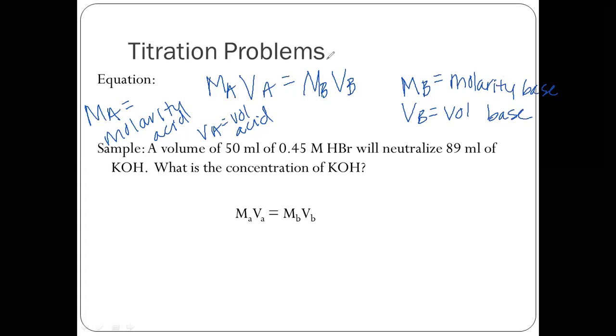So let's do the example problem together. A sample of 50 milliliters of 0.45 molar HBr. So I'm going to stop right here. And I would ask, is this an acid or a base? So it begins with H, so that indicates you have an acid. So this is your MA. And this is your VA. We'll neutralize 89 milliliters of KOH. So that's your base because it has OH. And this is your VB.